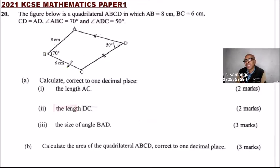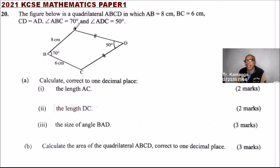We look at what is required for us to do: calculate to one decimal place the length of AC. This is our AC — we can use a line there to denote AC, so that is the line we are required to find the length of.